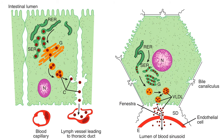The presence of these particles in the lymph after a lipid-rich meal gives it a milky appearance. This lymph is called chyle — as opposed to chyme, the semi-fluid mass of partially digested food passing from the stomach to the duodenum — and the particles are named chylomicrons. Chylomicrons follow the lymphatic system to the thoracic duct and are conveyed to the left subclavian vein, where they enter the blood. Once released into blood, chylomicrons pick up apolipoproteins E and C2.